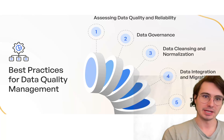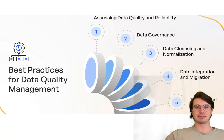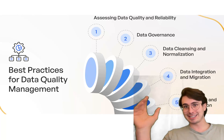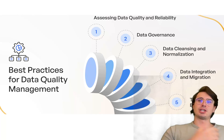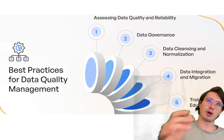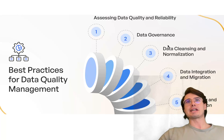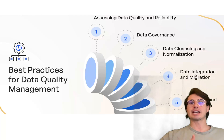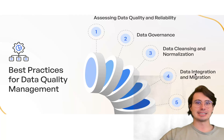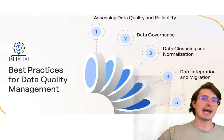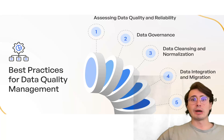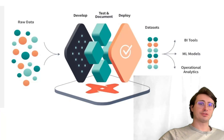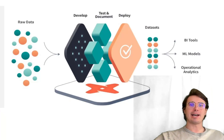Phase four covers advanced data engineering and analytics engineering concepts. Data quality is critical — poor quality data makes everything downstream inaccurate. Bring in tools like Great Expectations and Soda to implement data quality checks, data governance, data cleansing, and normalization. Set up automated tests for data accuracy, completeness, and consistency, and use tools like Prometheus and Grafana to monitor pipeline metrics and alert you when pipelines break or degrade.